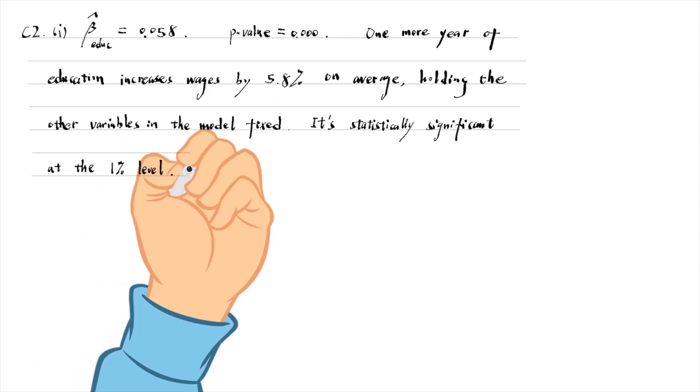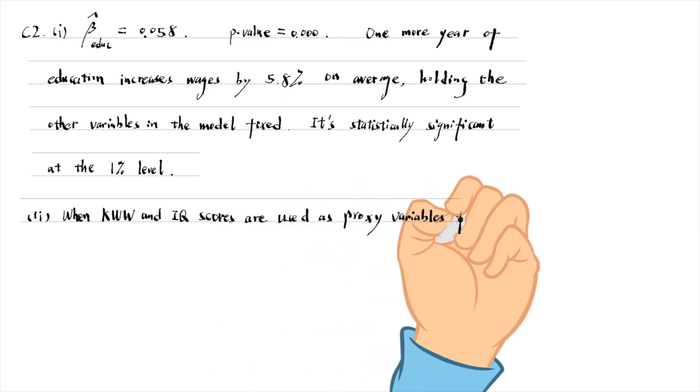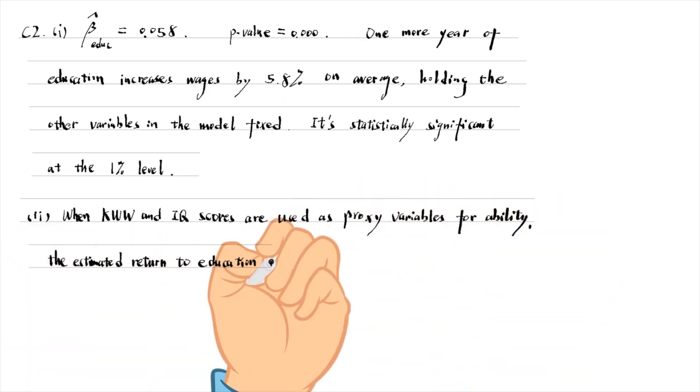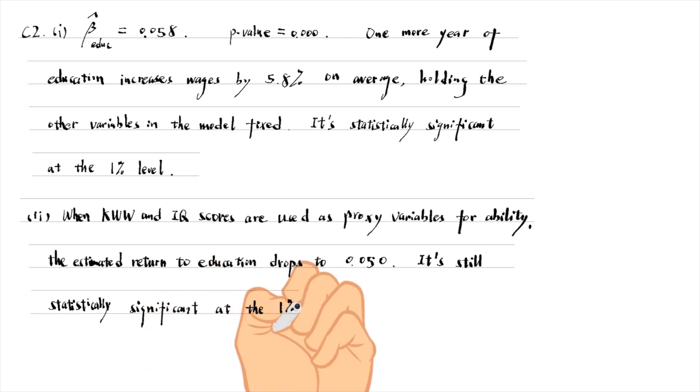In part 2, we use KWW and IQ scores as proxy variables for ability. The estimated return to education drops to 0.050. It is still statistically significant at the 1% level.